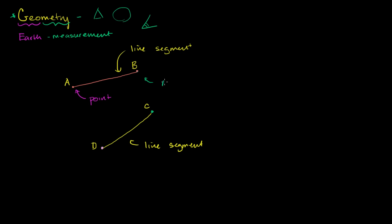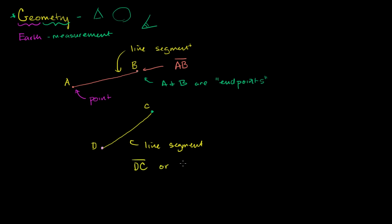We need a way to label these line segments. The best way is with their endpoints. We would write the endpoint letters — for example AB — and draw a line over it, like that, to show it's a line segment. We could also write it as BA with a line over it, referring to the same line segment. Similarly, the segment connecting D and C would be written as DC or CD with a line over it.